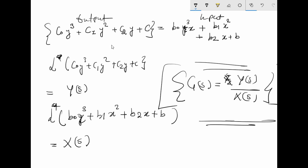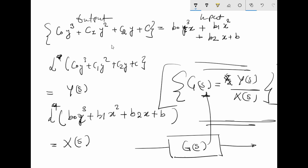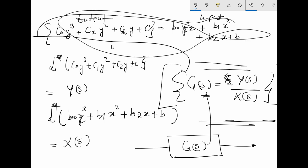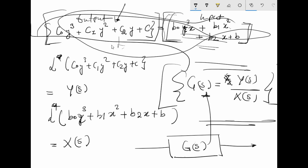When drawing a block diagram, the transfer function can be simply represented by a block labeled G(s). In the back end, the full differential equation is what is acting. The input could be a mechanical or electrical device modeled by one equation, and the output could be an actuator or amplifier modeled by another. This is the block diagram representation of a transfer function.